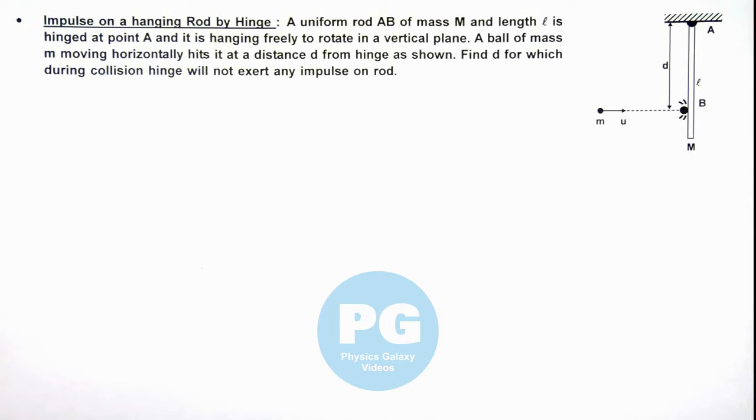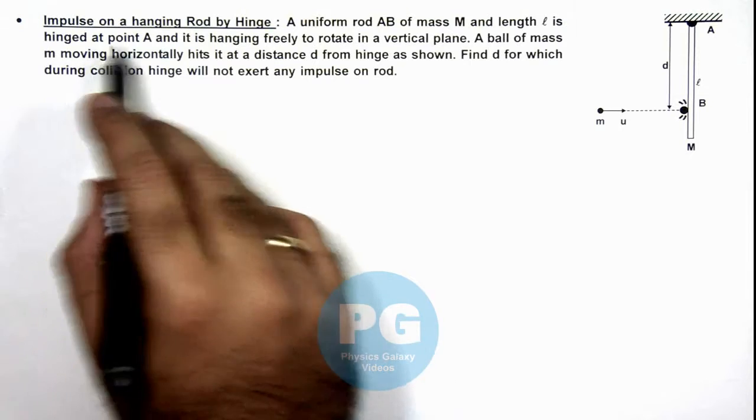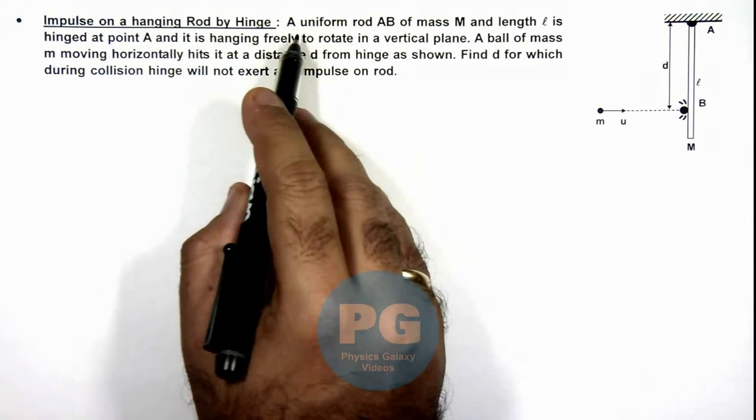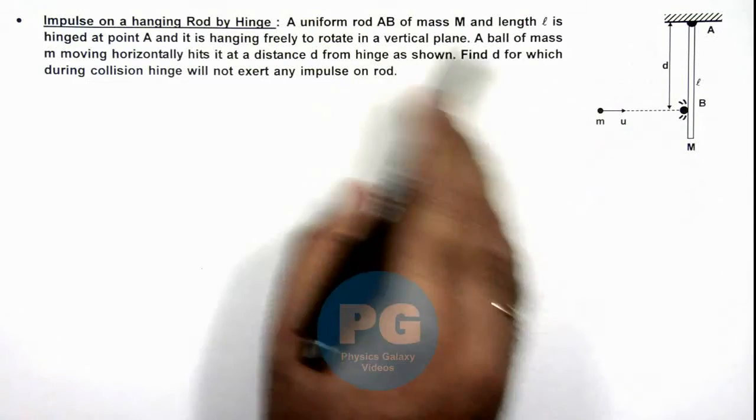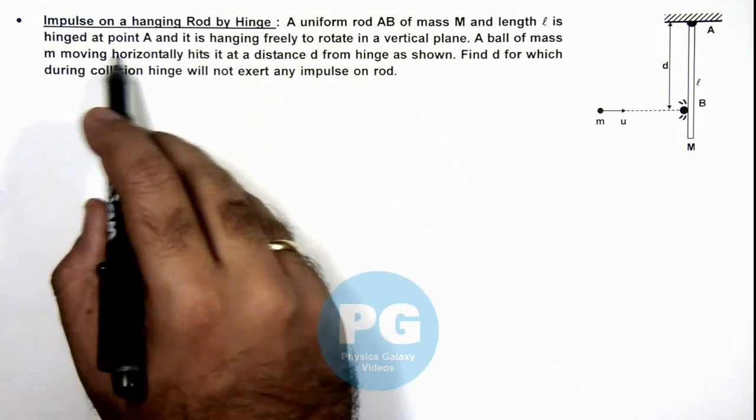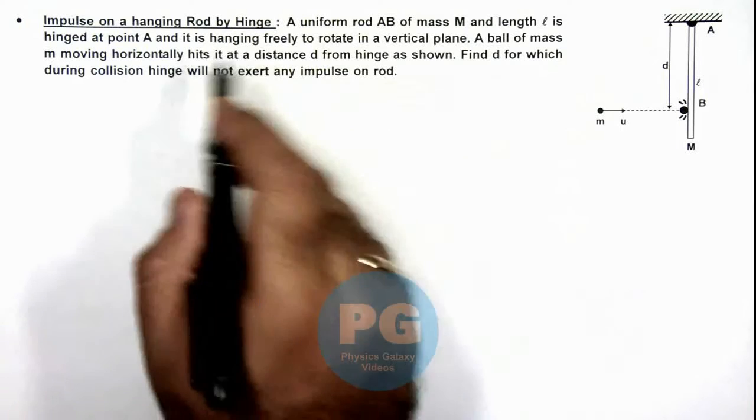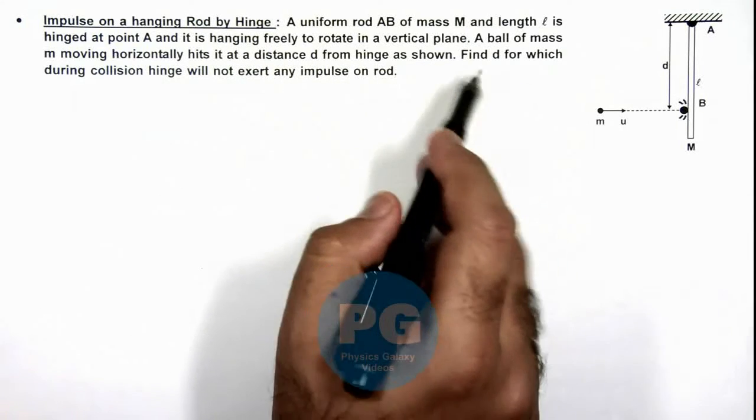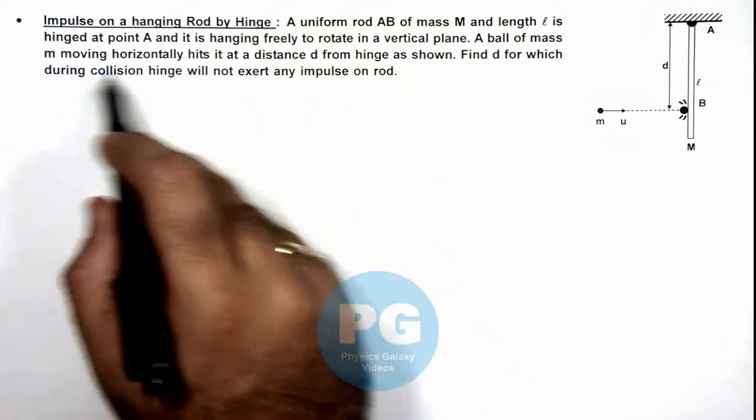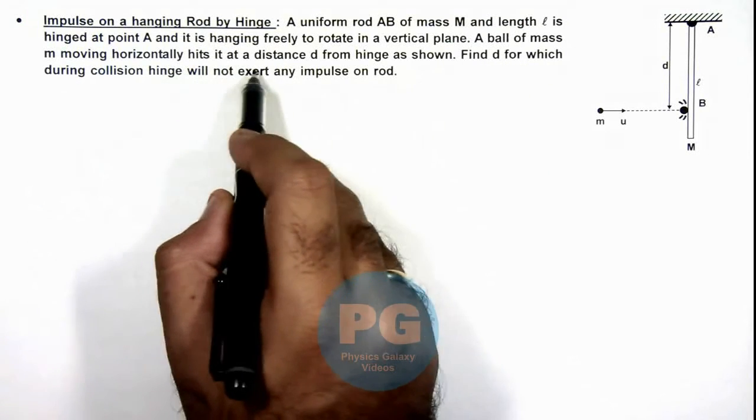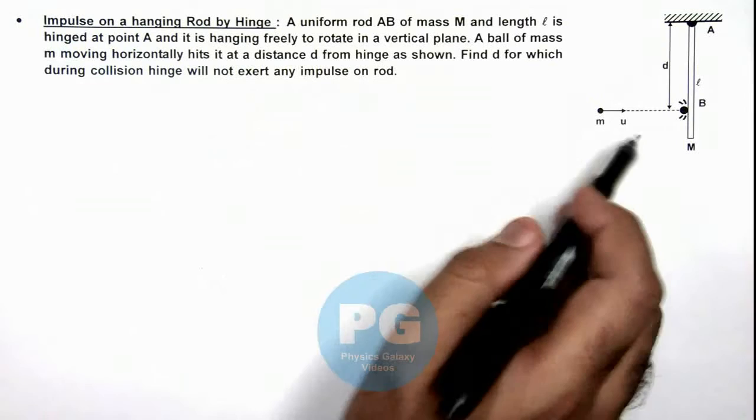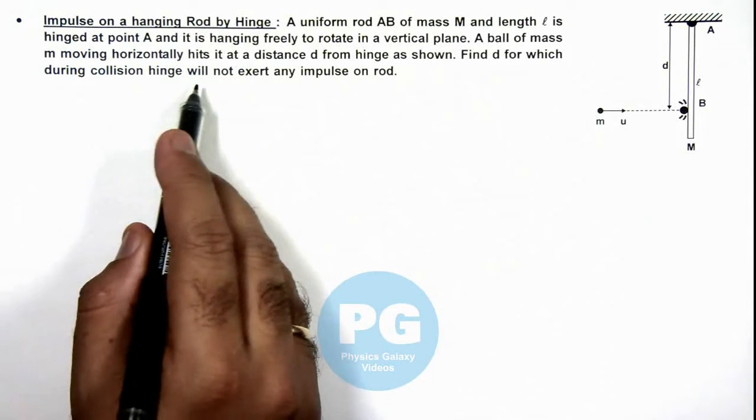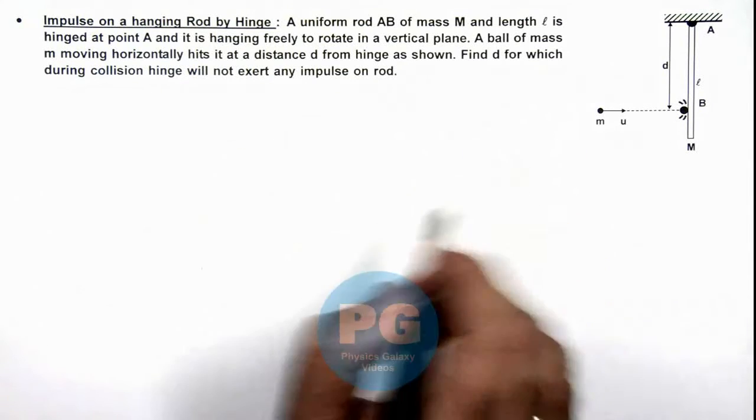In this illustration, we'll analyze the impulse on a hanging rod by hinge. Here we are given that a uniform rod AB of mass m and length l is hinged at point A, and it is hanging freely to rotate in a vertical plane. We are given that a ball of mass m moving horizontally hits it at a distance d from the hinge as shown. We are required to find d for which during collision hinge will not exert any impulse on the rod.